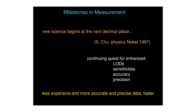All of this leads me to a statement by Steve Chu, physics Nobel laureate 1997: 'New science begins at the next decimal place.' The striving for improved limits of detection and increasing sensitivity is actually giving us that next decimal place. When you have that next decimal place, subtle things in nature become evident — for example, it used to be believed that most elements had fixed isotopic abundances, but it's becoming clear that many elements' isotopic abundance varies in nature. So there will be a continuing quest for enhanced limits of detection, sensitivities, accurate precision, and more data coming at a faster rate, and we'll certainly need chemometricians to help process it.